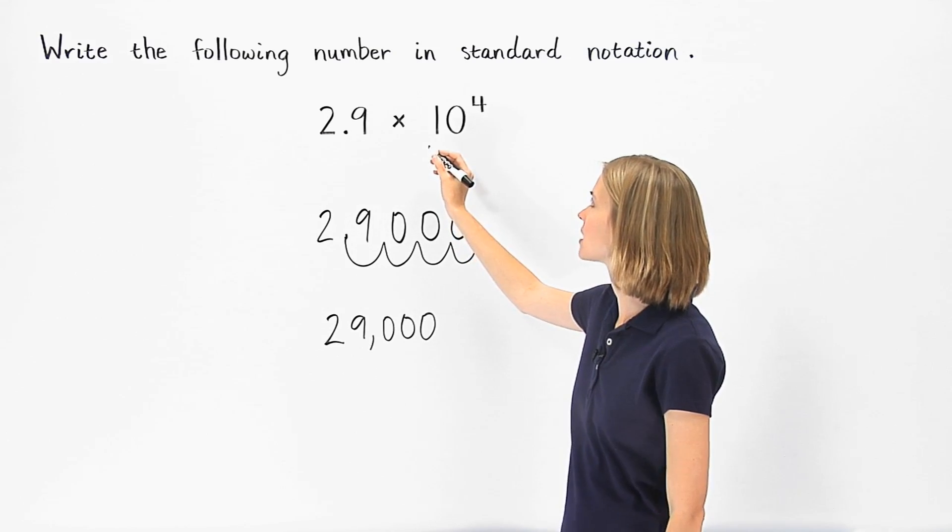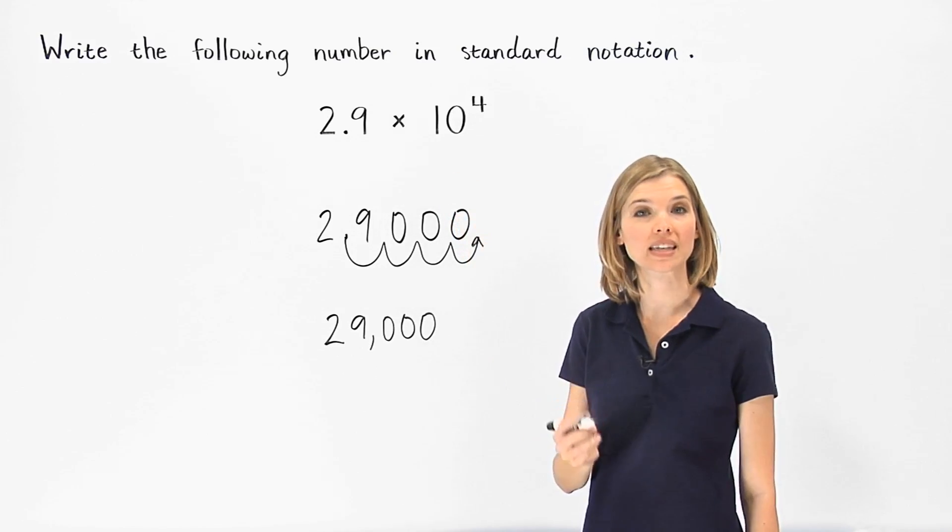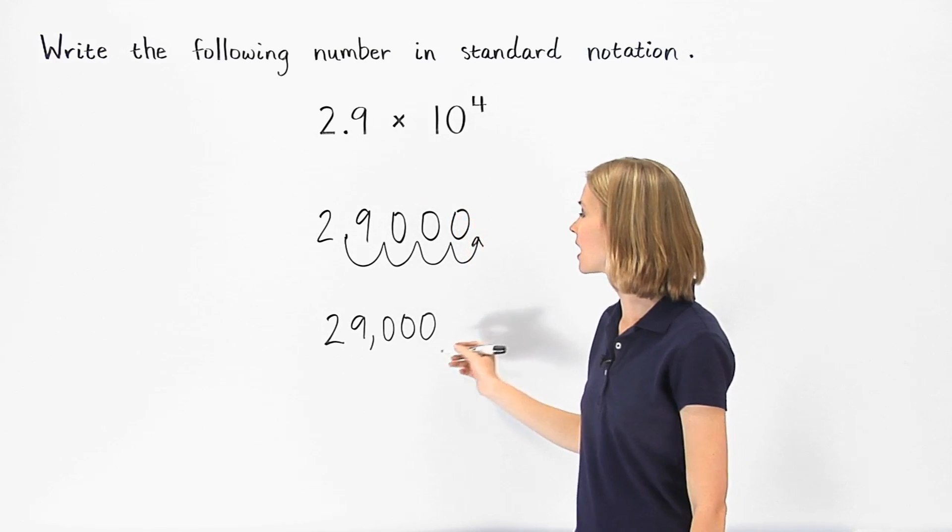So 2.9 times 10 to the fourth power, written in standard notation, is 29,000.